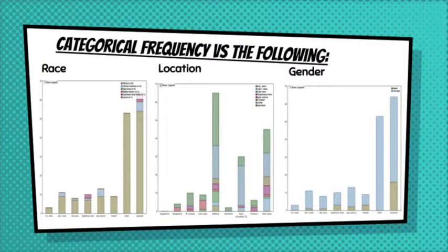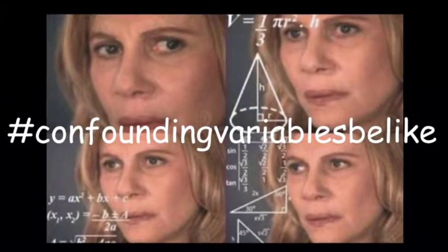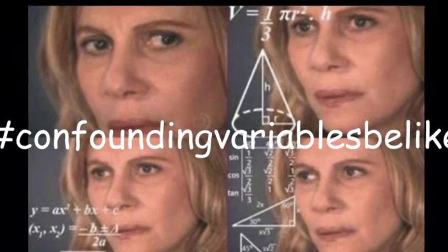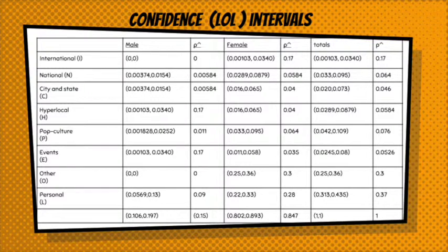The next thing I did was categorical frequency, through the calculations for the large counts condition for my confidence intervals. I expected to lose some data here as a process to weed out data that wasn't going to be useful, but I lost more than I thought I would. The entirety of the location data and race data had so many counts lower than 10 that it was just unusable.